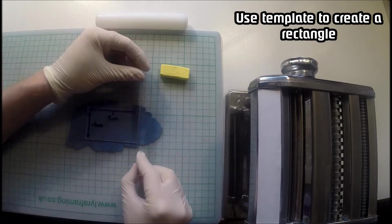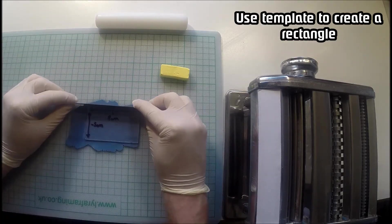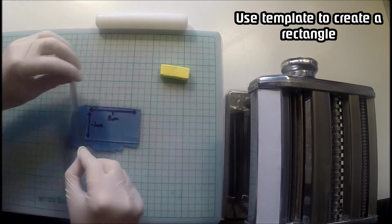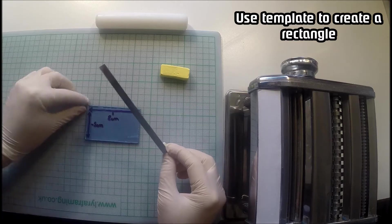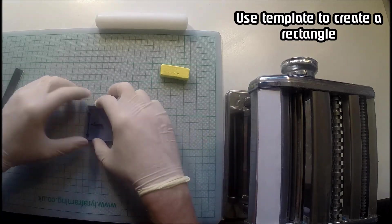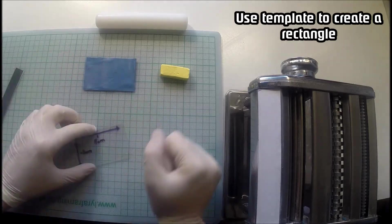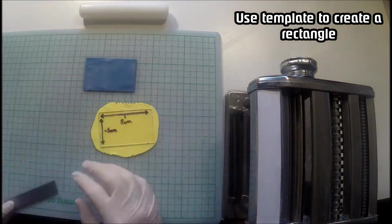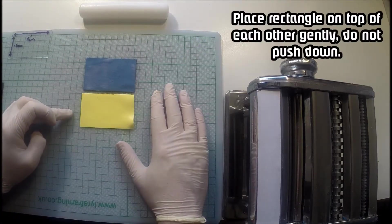Put your template onto the clay and then you're going to want to trim around the edges of the template. Once you've finished trimming, simply separate the clay from the perspex and then do exactly the same with the other color until you have two perfect rectangles.